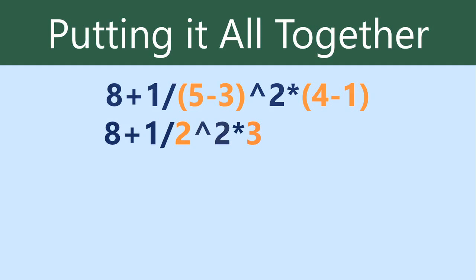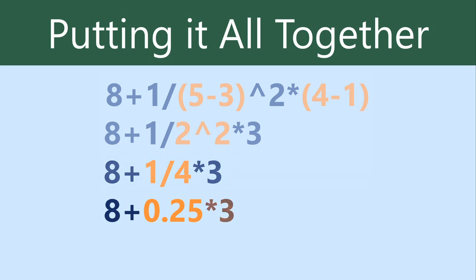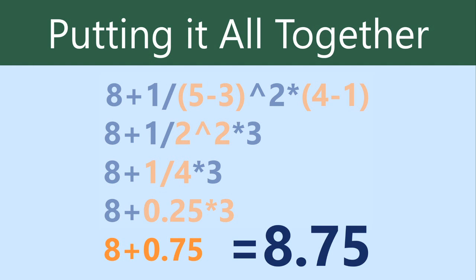Next, we'll look to see if there are any exponents in this formula. There is one. 2 to the second power. When we calculate it, it becomes 4. Next, we'll do the multiplication and division, going from left to right. And now all that's left is addition. And that gives us our answer, which is 8.75. And that's the same answer Excel would give you if you entered that formula in your worksheet.